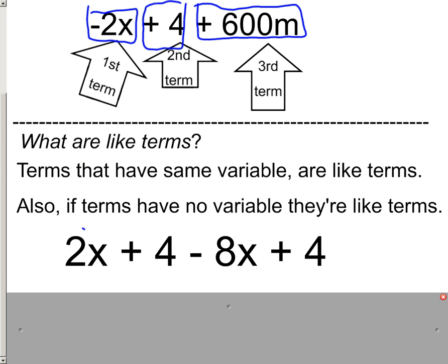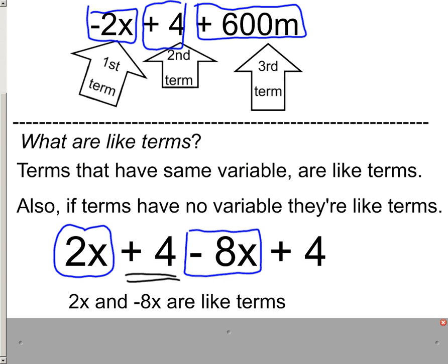First off, I always tell my students start with your very first term, and then just scan the expression or equation to see if there's any other terms that have the same variable. Like this has an x on it. Does this 4, which is your second term, does this have an x on it? No. But this minus 8x, that one sure does. So we would say that the 2x and negative 8x are like terms.